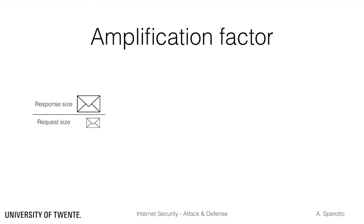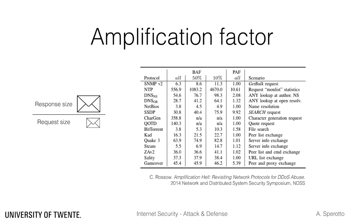We define amplification factor as the ratio between the response size and the request size. From an attacker's point of view, the higher the amplification factor, the more the attacker can achieve with fewer resources. Reflection and amplification attacks typically use servers as amplifiers and leverage protocol characteristics that generate large answers. A typical example is a DNS-based attack that uses ANY queries, because they generally yield large responses. The table on the right shows examples of bandwidth amplification factors (BAF) for a set of known protocols. NTP can amplify an attack up to more than 550 times, and Chargen more than 350 times.